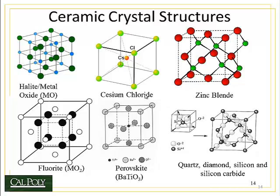How about ceramic materials — do they have crystal structures? The answer is yes, almost always. The exception is ceramic materials that don't have crystal structures, which are known as glasses. Any material that is ceramic but does not have a crystal structure is called a glass, even materials that you can't see through at all. We're interested in the crystalline structures of some of the ceramic materials that we commonly find.